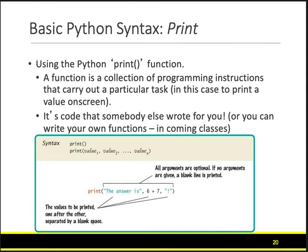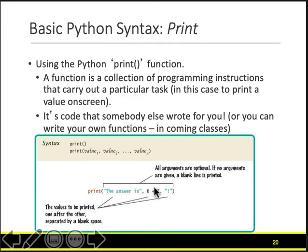Anything written without quotes is computed. So 'the answer is' goes to the screen as is. Anything else not in quotes after the comma is computed — the CPU will compute it, the answer becomes 13, and it will put 13 on the screen. You will see 'the answer is 13'. Then you can put another comma and another set of quotes with something in them. So 'the answer is 13, exclamation mark' will be thrown out to the screen.